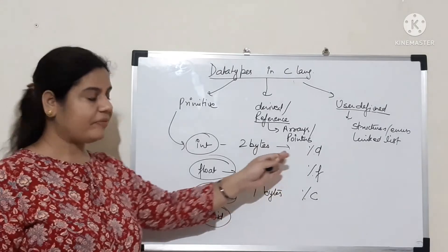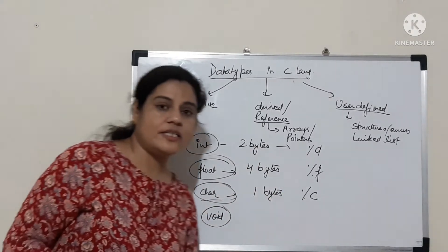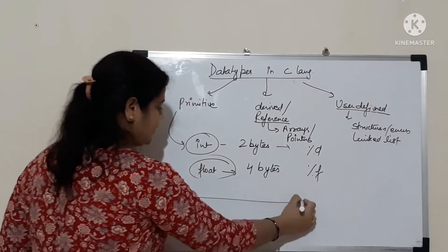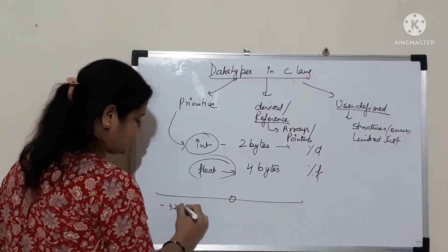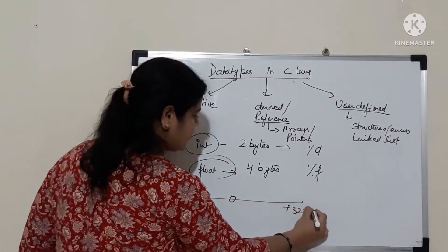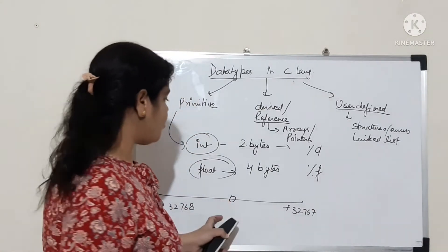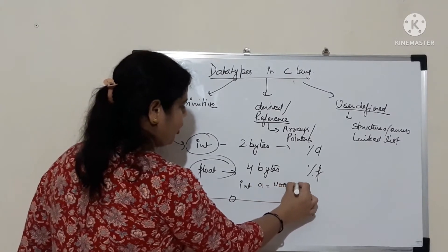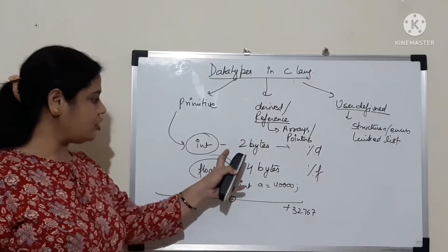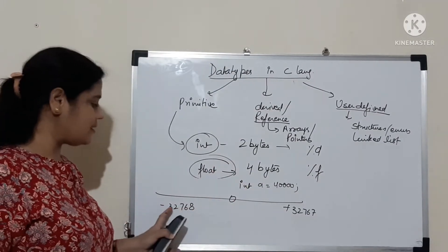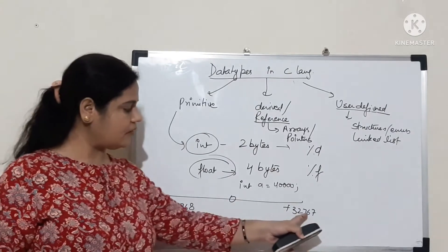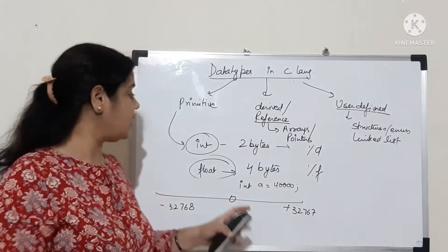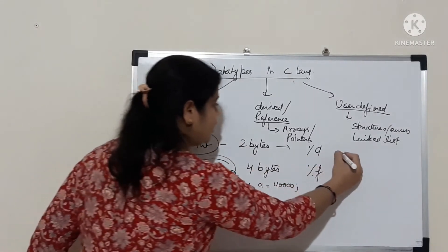Integer and float have some range. For example, integer has the range from minus 32,768 to positive 32,767. If I want to store 40,000 in it, I cannot, because the range of integer is minus 32,768 to positive 32,767. To exceed the range of integer, you need to use long integer, which takes 4 bytes in memory.